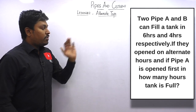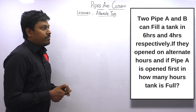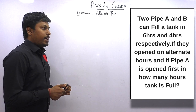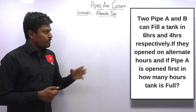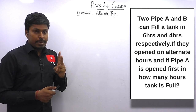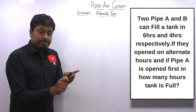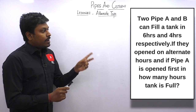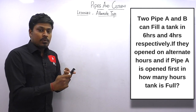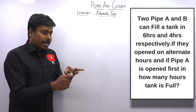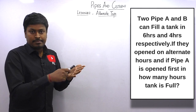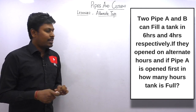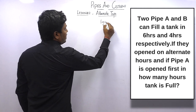Question number one: Two pipes A and B can fill a tank in six hours and four hours respectively. If they are opened on alternate hours and pipe A is opened first, in how many hours will the tank be full? There are two pipes — pipe A fills the tank in six hours, pipe B fills the complete tank in four hours. They open on alternate hours, so pipe A is opened first, then after one hour pipe B, then pipe A again, and so on.